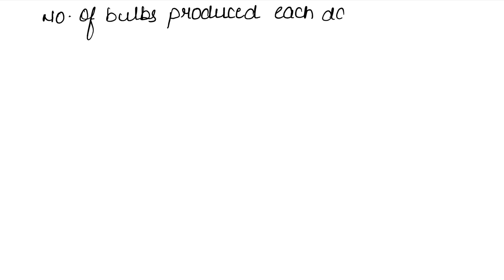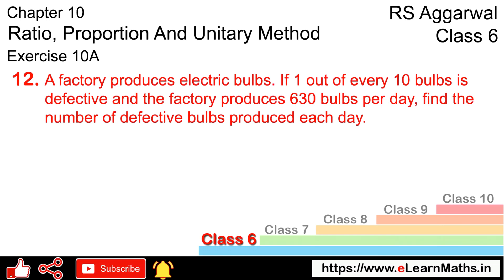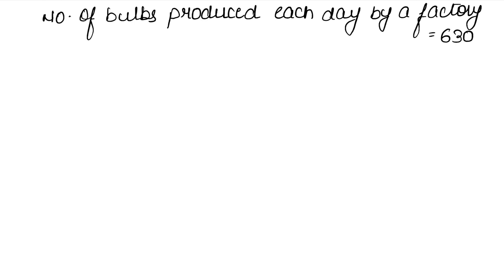The factory makes 630 bulbs in one day. And they are saying that one bulb is defective from every 10 bulbs. So what will be the ratio of defective bulbs?